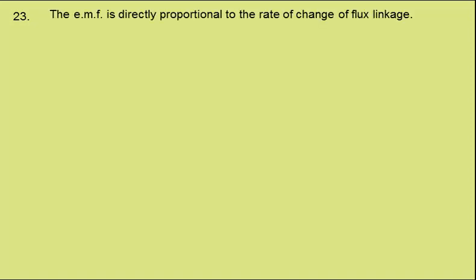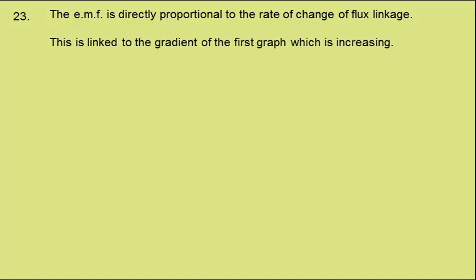The EMF is directly proportional to the rate of change of flux linkage. This is linked to the gradient of the first graph, and the gradient of the first graph is increasing. The EMF is shown by graph D, the only graph showing an increasing EMF.